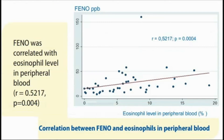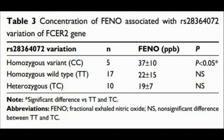The results of our study also demonstrated that there was a moderate and significant correlation between FeNO and blood eosinophil count. The FCER2 gene, coding for the low-affinity IgE receptor, has been investigated for its association with ICS response and asthma severity. In our study, 5 of the 32 patients had an FCER2 gene mutation — a homozygous variant CC.